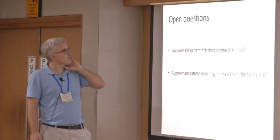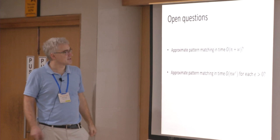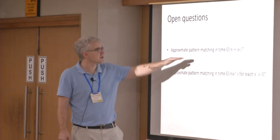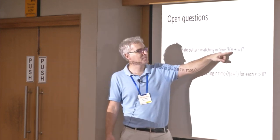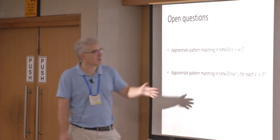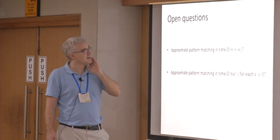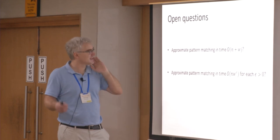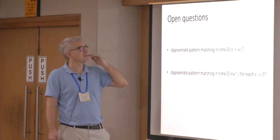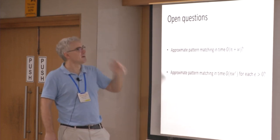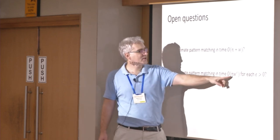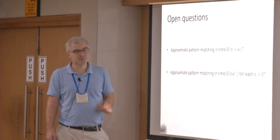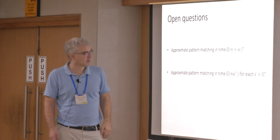Let me conclude with open questions. The most tantalizing open question is: can we do approximate pattern matching in time N plus W — that is, linear or quasi-linear time? I believe such an algorithm might exist, though I have no idea how to make it. A slightly weaker question: can you do it in N times W to the epsilon for any epsilon you choose? Thank you.